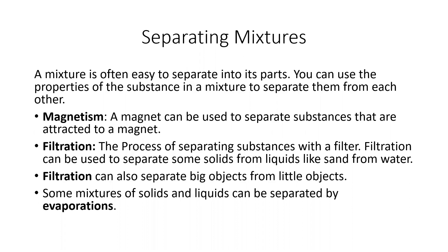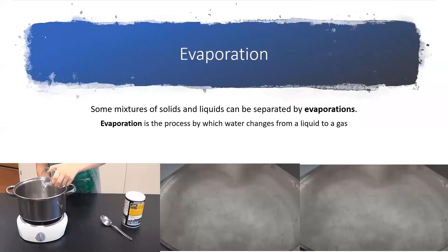Filtration can also separate big objects from little objects. And then some mixtures of solids and liquids can be separated by evaporation. You guys remember evaporation — we saw a bunch of different videos on this. Basically, when they take salt water and boil it to the point that the water turns into a gas, you are left with the salt residue, just like these two pictures here.